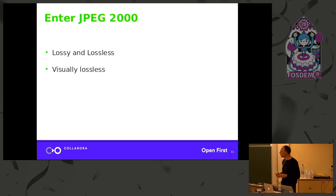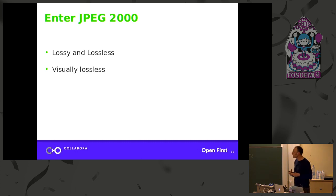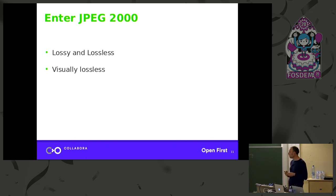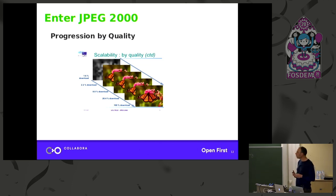JPEG 2000 also supports lossy and lossless in one unified framework. The only difference is the transform is slightly different for lossy, and there's quantization where you lose data — otherwise the framework is exactly the same. You can also get visually lossless encoding where there is loss of data, but the human eye can't detect the difference.